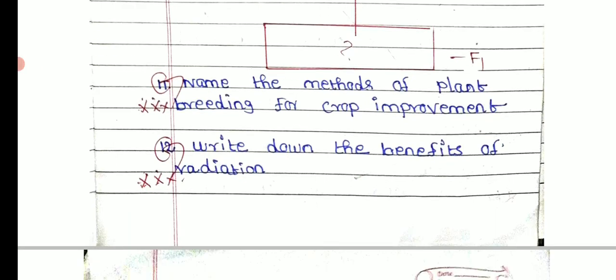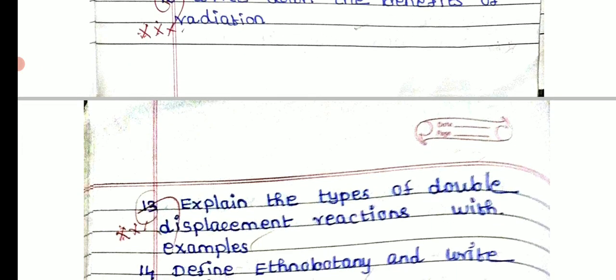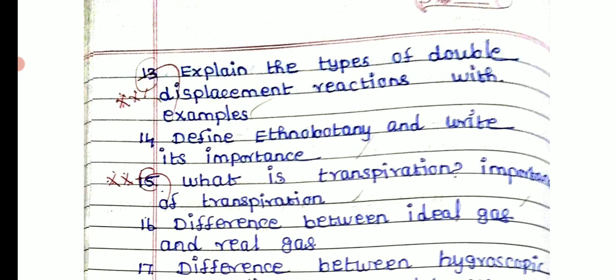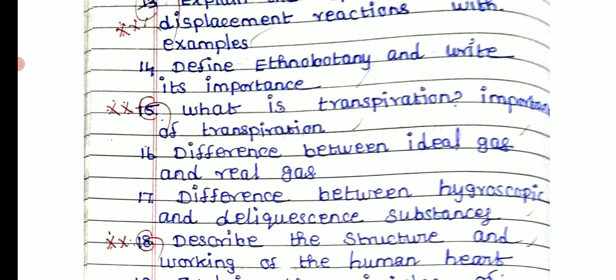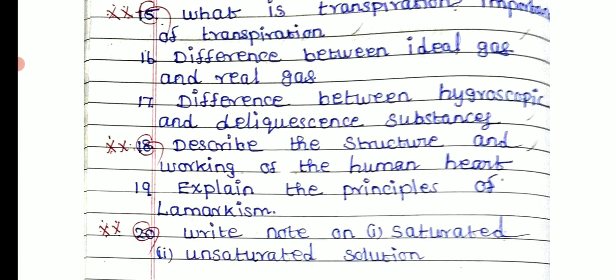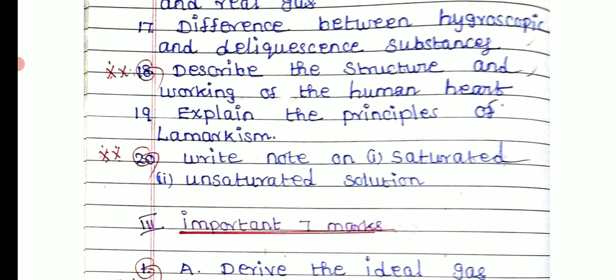Write down four benefits of radiation. Explain the types of double displacement reaction with an example. Define ethnobotany and write its importance. What is transpiration? Write the importance of transpiration. Distinguish between ideal gas and real gas. Distinguish between hygroscopic and deliquescent substances. Describe the structure and working of the human heart. Explain the principles of Lamarckism.